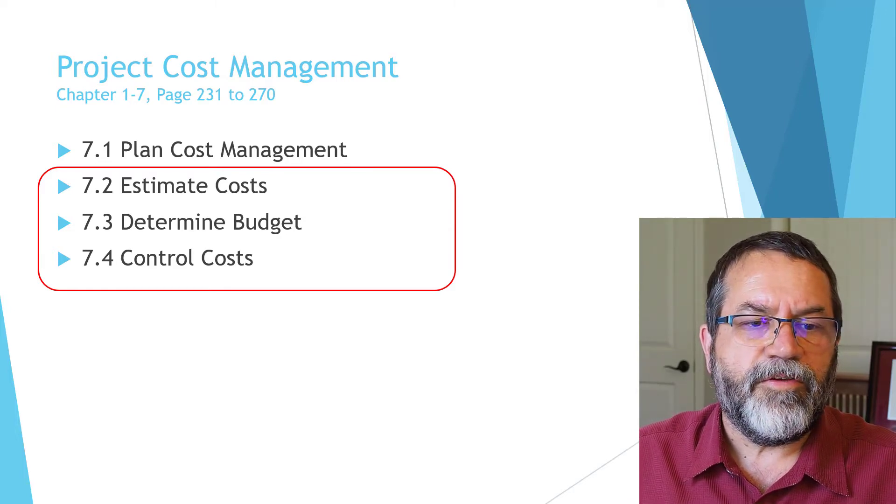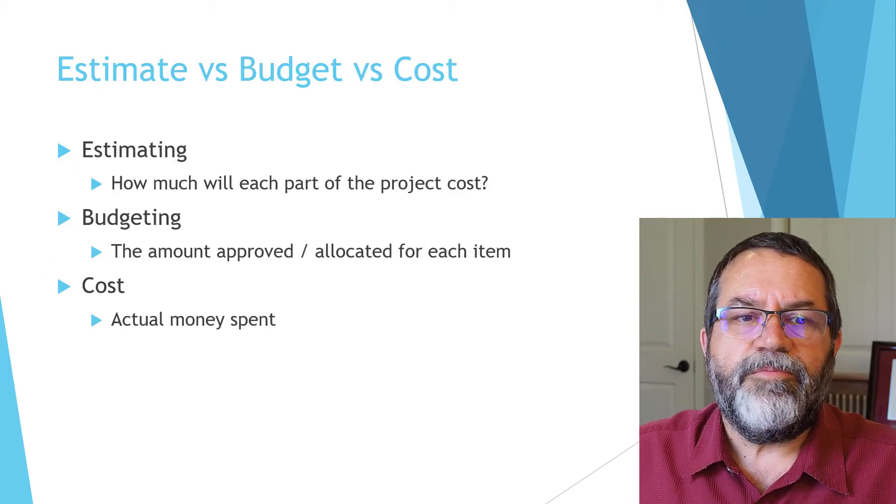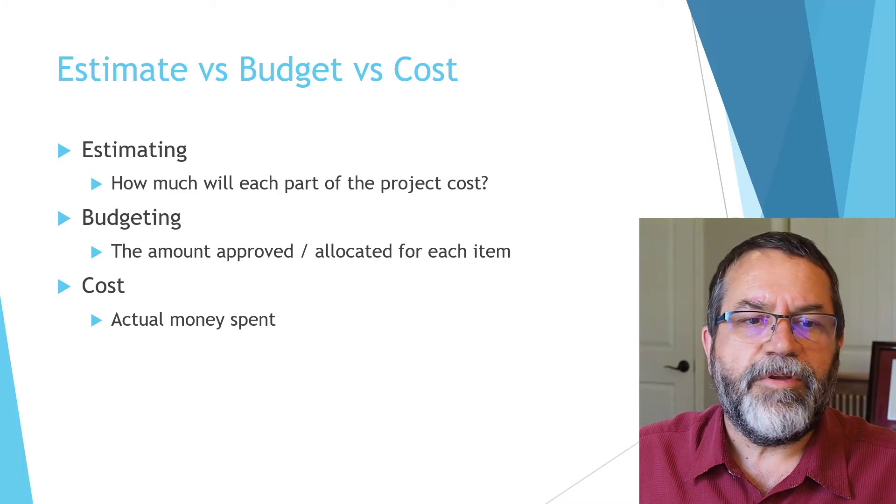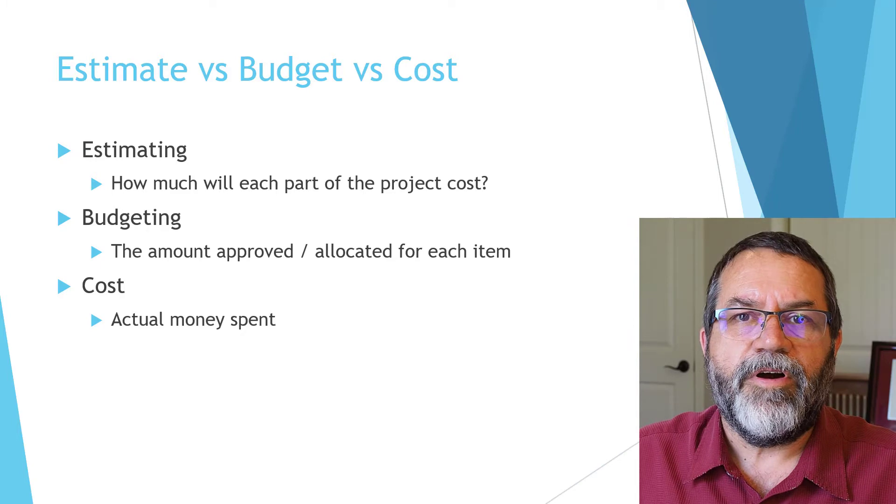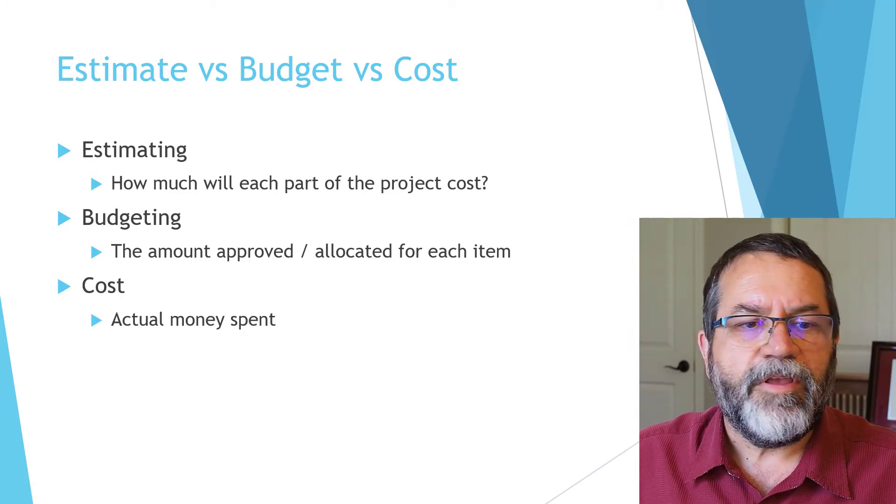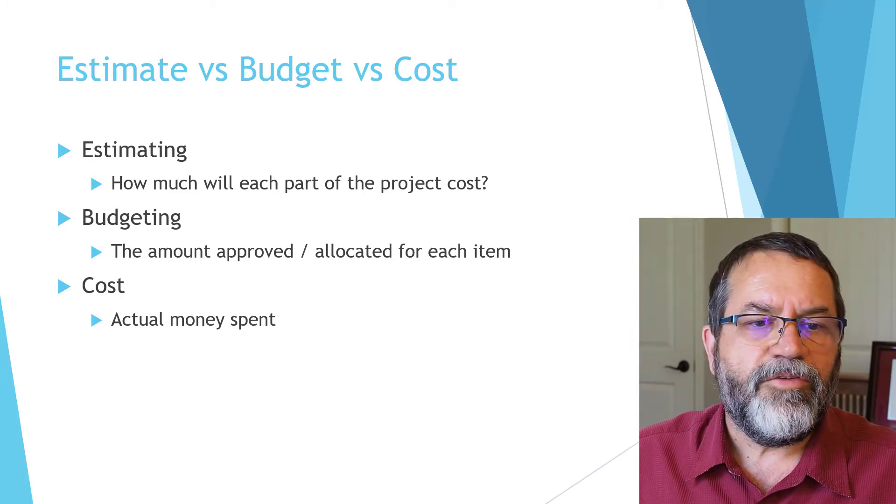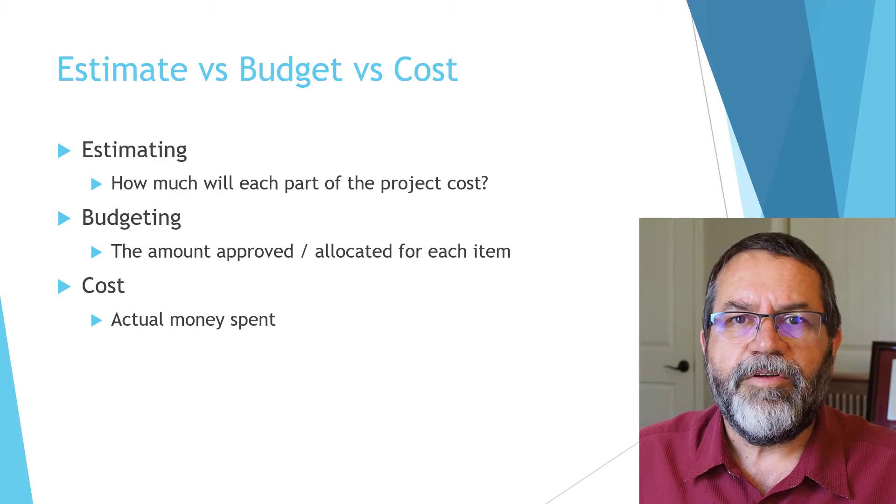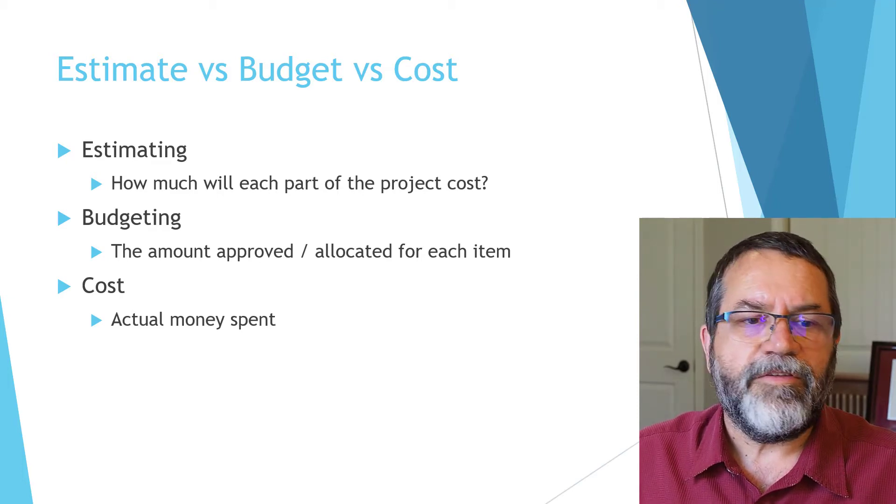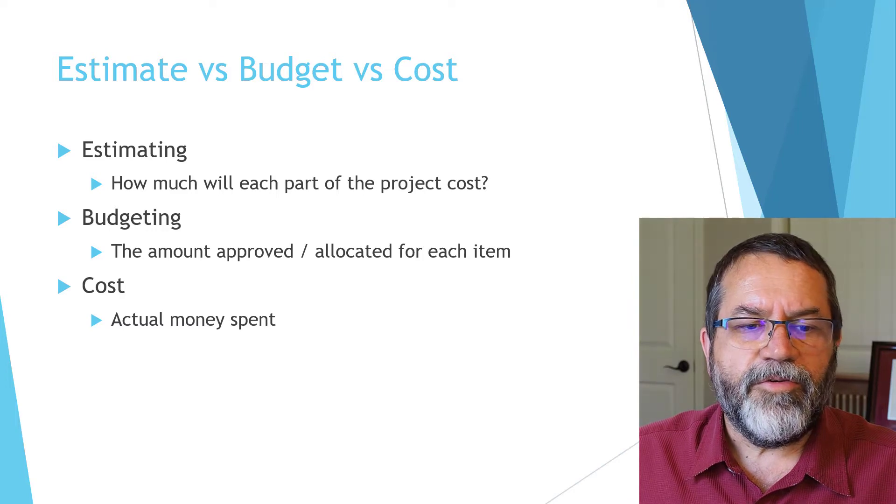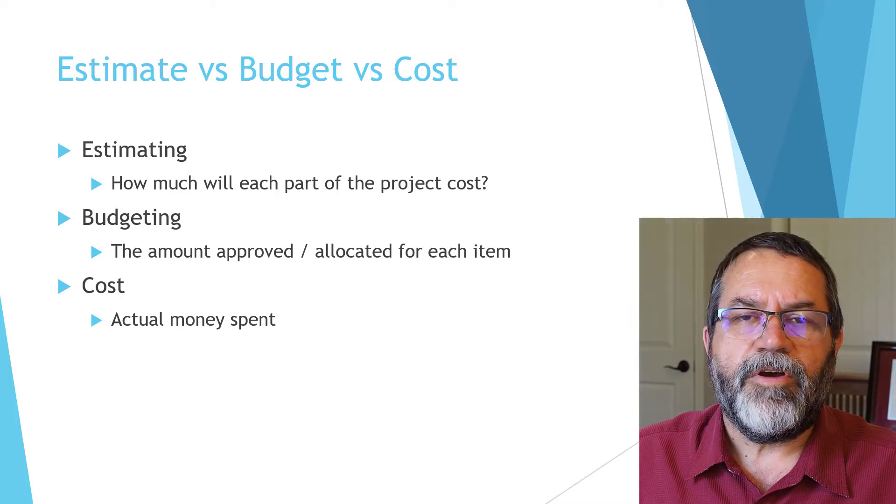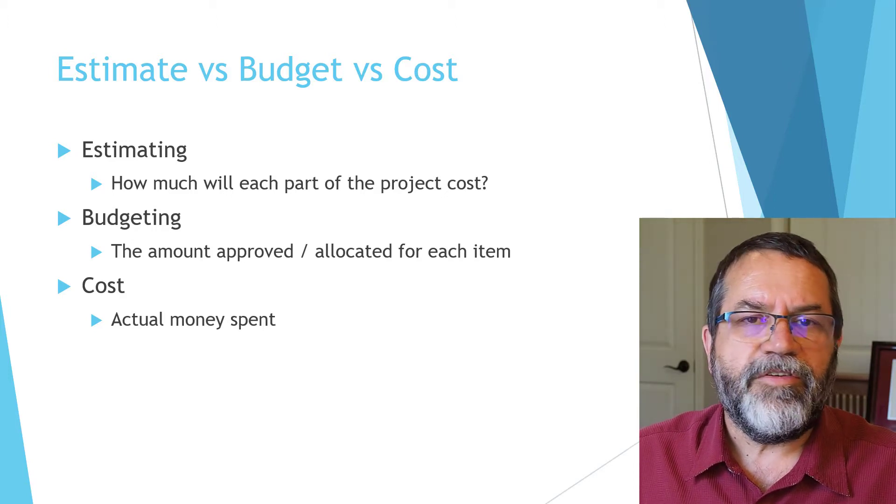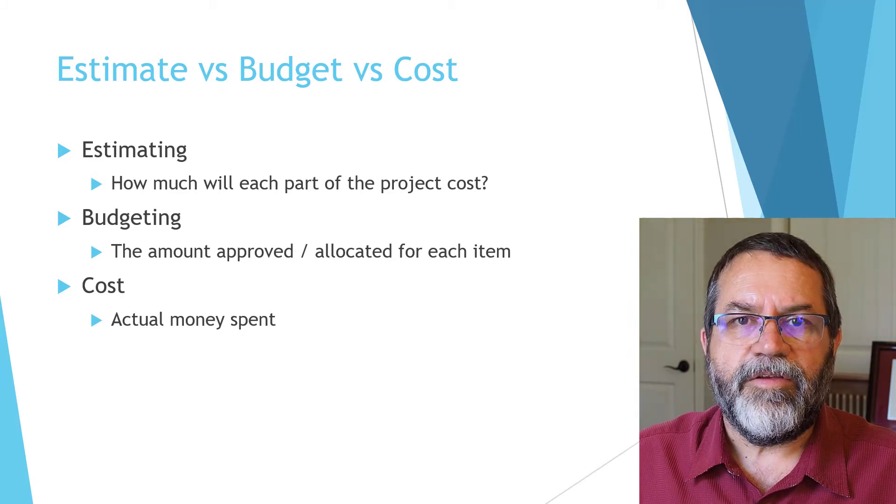Let's look at these three words and what they mean. Estimating is determining how much every part of the project will cost. Budgeting then is taking the estimate and turning that into an amount that's authorized or allocated for each task, so they're very similar but a little bit different. Cost, by the way, is the actual money that's spent. Budget is the amount of money that's allocated to be spent.